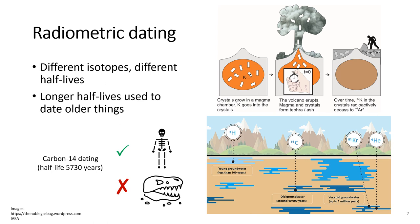For example, carbon-14 is really useful for dating things within the last 40,000 years and is used a lot in archaeology to date human bones at various sites. However, you wouldn't want to use carbon-14 to date dinosaur bones since they went extinct about 65 million years ago. Because they went extinct so long ago, there wouldn't be enough carbon-14 left in the bones to detect.